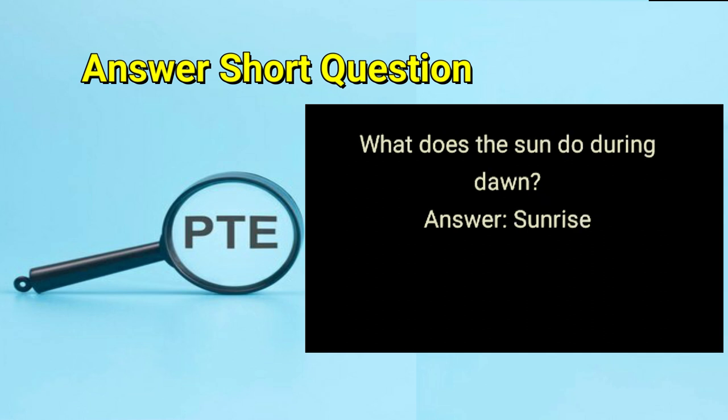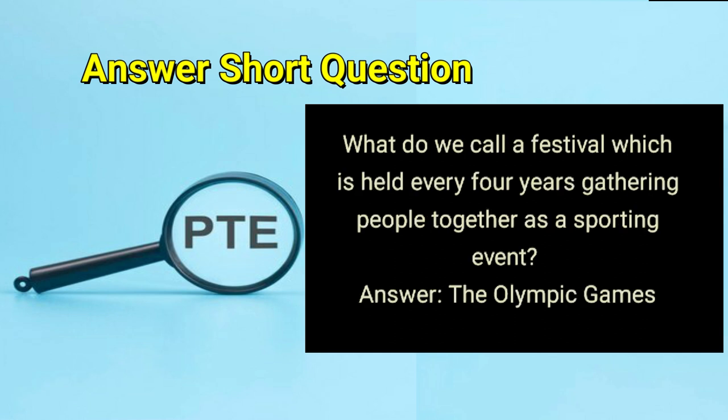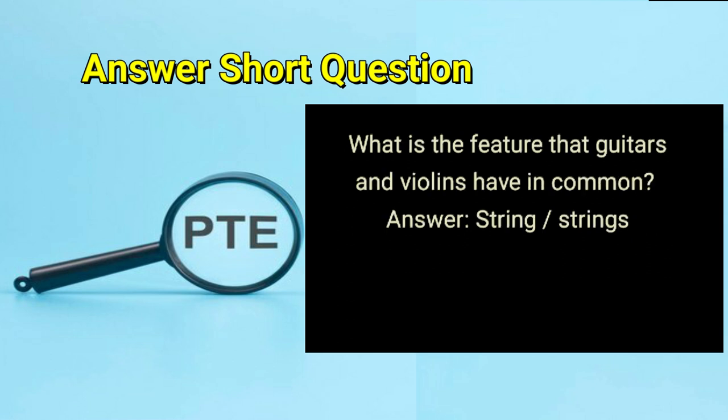What does the sun do during dawn? Answer: sunrise. What do we call a festival held every four years gathering people together as a sporting event? Answer: the Olympic Games. What is the feature that guitars and violins have in common? Answer: string or strings.